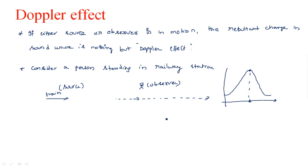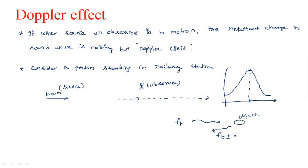Now, how this effect is used in radar systems to identify moving objects: we transmit a signal with a frequency ft — the transmitter signal frequency. This waveform touches the object which is in motion. If the object is stationary, the resultant signal frequency is ft only. If the object is moving, the resultant frequency will have ft plus or minus a change — that change in ft is nothing but the Doppler frequency fd.